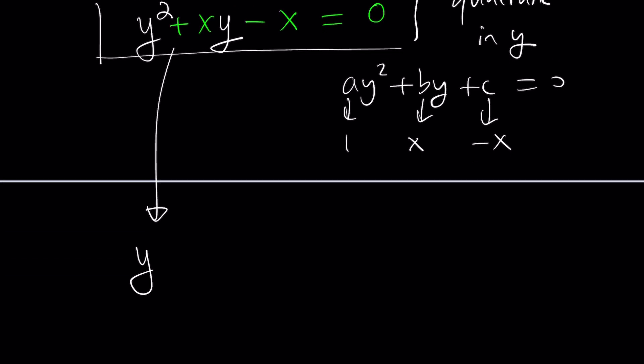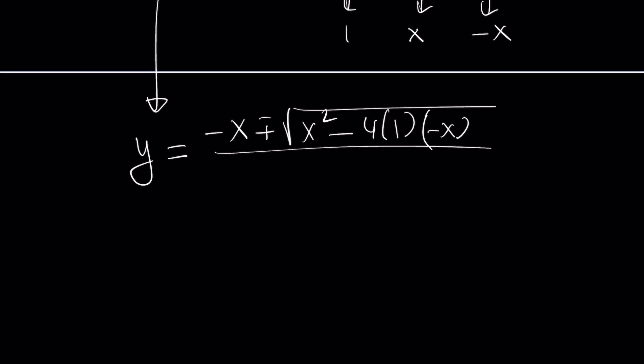Okay, so y is going to be equal to negative b. Since you know what b is, that should be easy to do. Plus minus the square root of b^2 minus 4ac. A is 1 in this case. C is negative x. Awesome. And then we can divide this whole thing by 2a, which is 2, because a is equal to 1, right? Once you know the coefficients a, b, c, the rest is kind of easy. Great. So that's the answer.